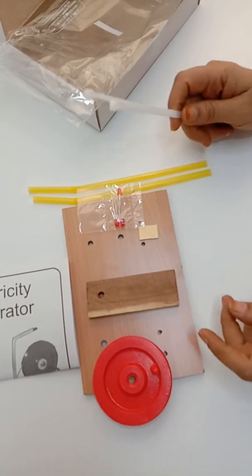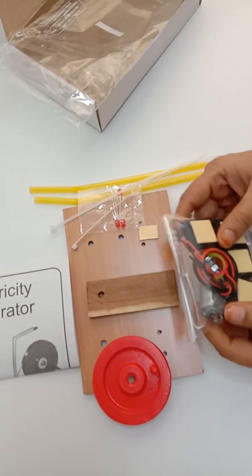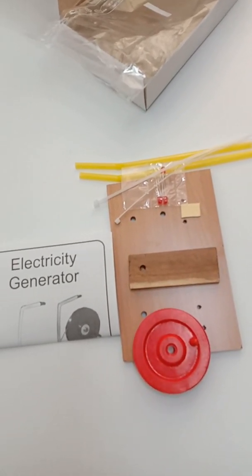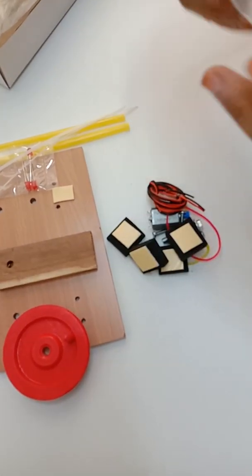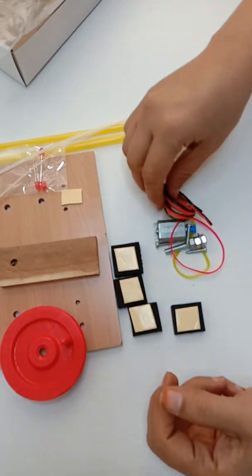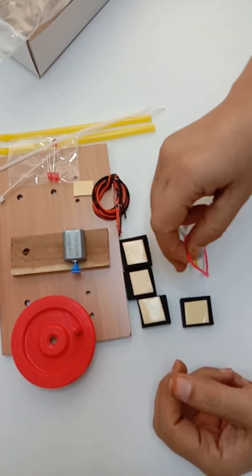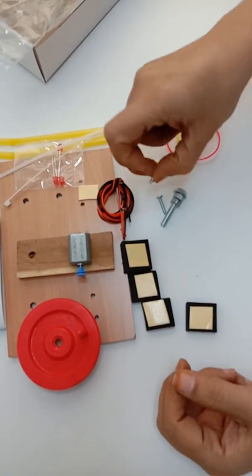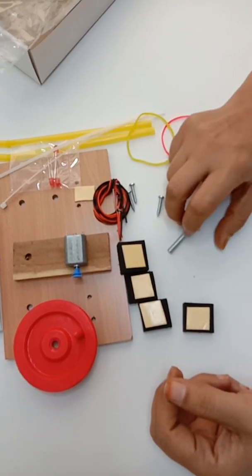There are LEDs, cable ties, foam pieces with two-way tape, then connecting wires, four foam pieces, connecting wire, dynamo motor. These are the rubber bands, these are the screws, and this is a nut bolt.